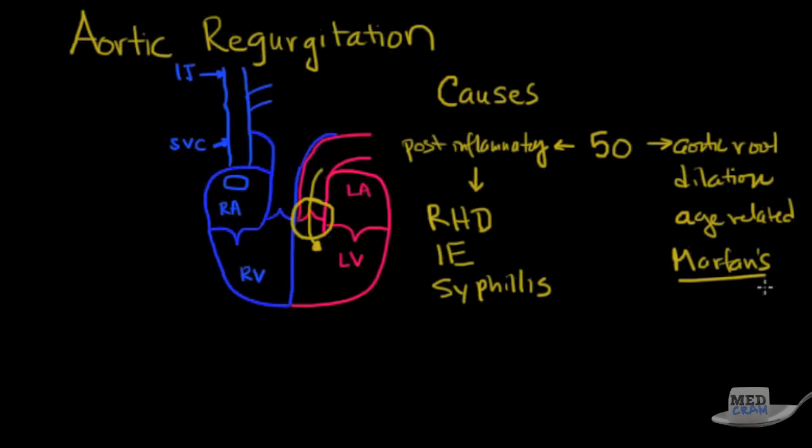Marfan syndrome as you may know is where they're very tall, they've got long legs and long arms and they can get aortic root dilatation. In terms of other things to think about is lupus or SLE and this thing called ankylosing spondylitis. Ankylosing spondylitis, that's where they get the bamboo spine.